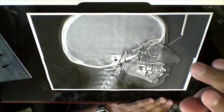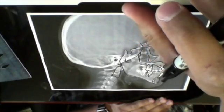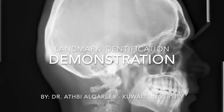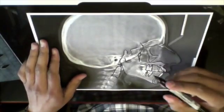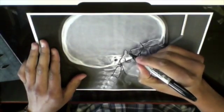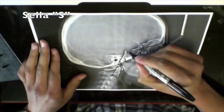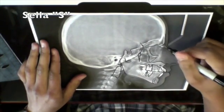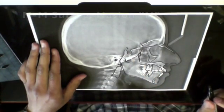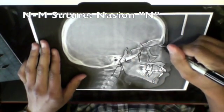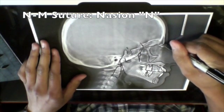You may now start marking your landmarks. Mark sella at the middle of the sella turcica concavity and mark it with an S. Mark nasion at the nasomaxillary suture and mark it with an N.